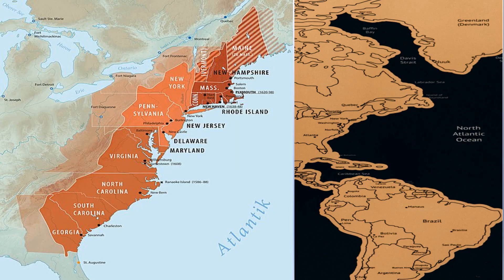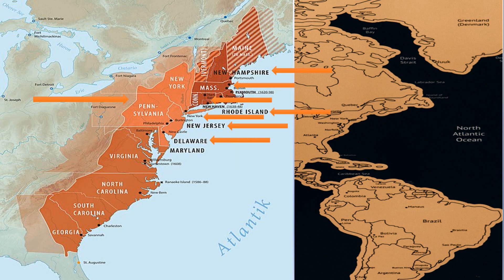The 13 colonies were New Hampshire, Massachusetts, Rhode Island, Connecticut, New York, New Jersey, Pennsylvania, Delaware, Maryland, Virginia, North Carolina, South Carolina, and Georgia.